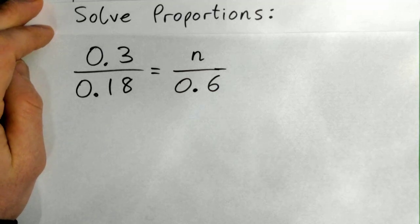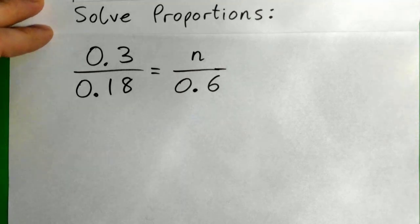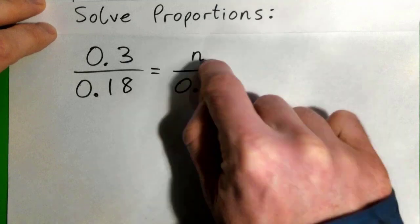Alrighty, so in this example we're going to solve this proportion: 0.3 over 0.18 equals n over 0.6. We have to find n.